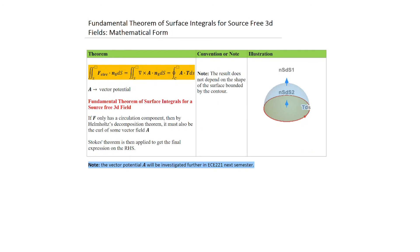Now for source-free in 3D, where we're dealing with surfaces: if I take an open surface, F-circ dot N dS, because we know this is a source-free field, I can write this field in terms of a curl of a vector potential A. Then I can use Stokes Theorem to relate this expression to another: the curl of a vector field dot N dS is equivalent to taking a closed-loop contour integral A dot T dS. This is the Stokes Theorem picture—it doesn't really matter whether you deal with one surface or another, as long as the contour is bounding that surface. The vector potential A will be investigated in more detail in EC221, the Electromagnetics course next semester.